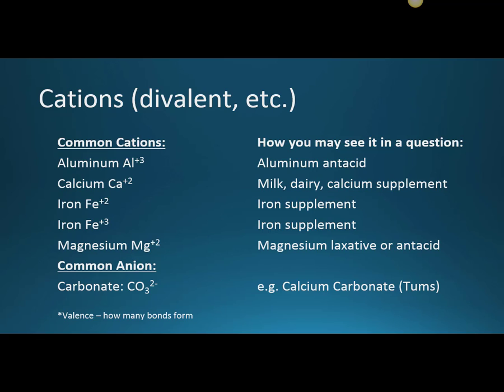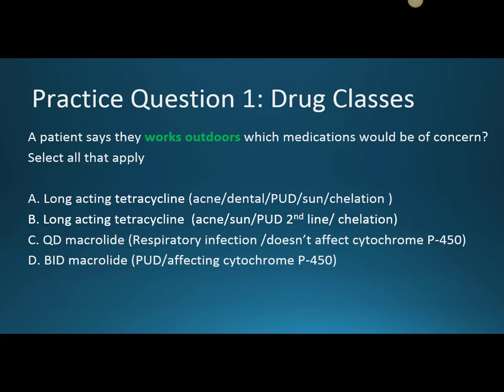Question one: a patient works outdoors — which medication would be of concern? A long-acting tetracycline is doxycycline, indicated for acne, dental conditions, and peptic ulcer disease, and it causes photosensitivity and chelation. Minocycline is similar, except it's second-line for peptic ulcer disease, has no oral form for dental use, but also causes photosensitivity and chelation.